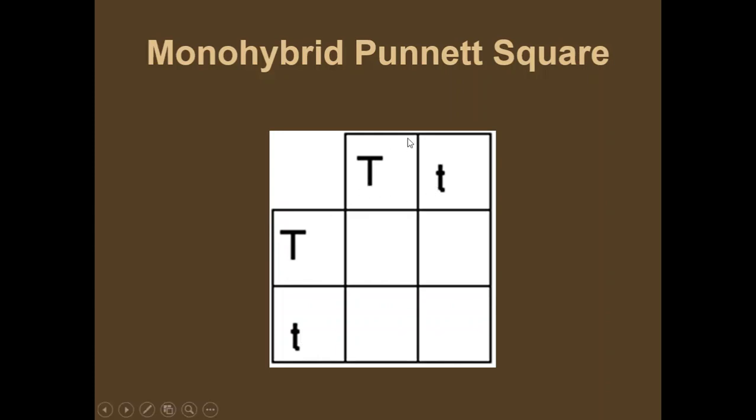So usually you put the male of the organisms on the top and the female on the side, although it really doesn't matter. But that's just what most people do. Okay, so in this square right here, you're going to pull down this allele and pull across this allele. So in this square, it would be a capital T, capital T.